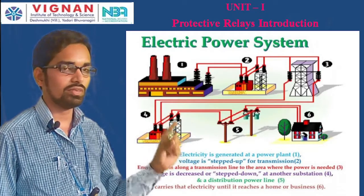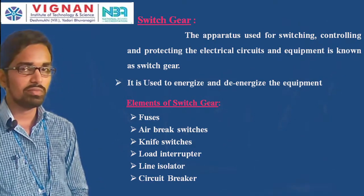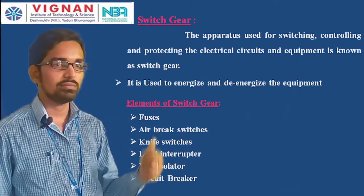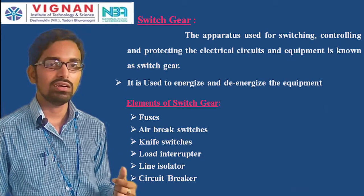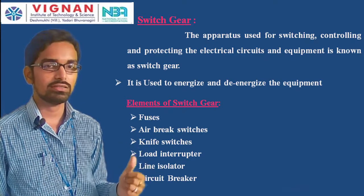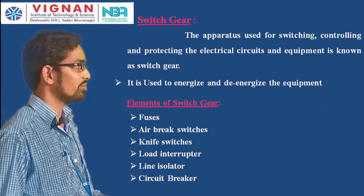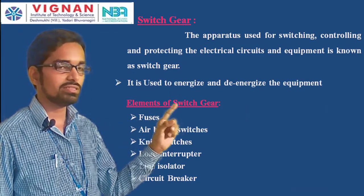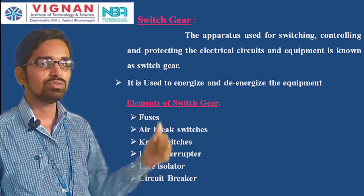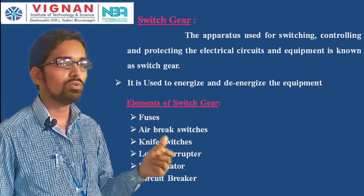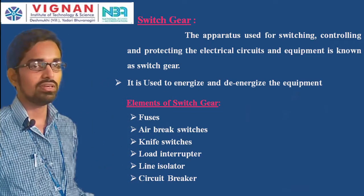To protect all electrical power system equipment, we install a protective system. The first protection equipment category is switchgear. Switchgear refers to the apparatus used for switching, controlling, and protecting electrical circuits and equipment. It is used to energize and de-energize equipment — essentially turning it on and off.